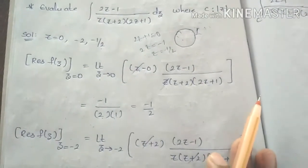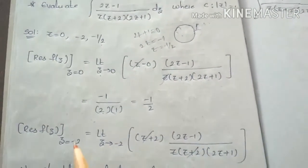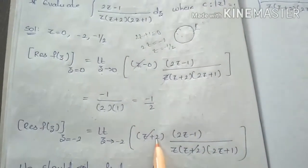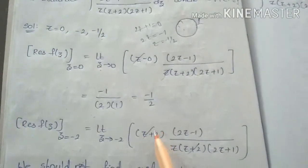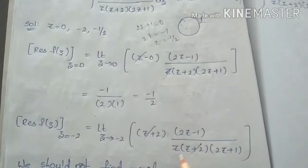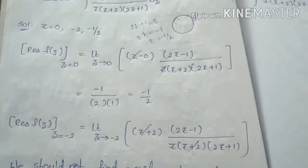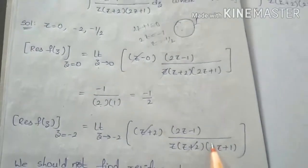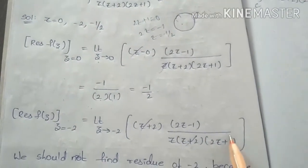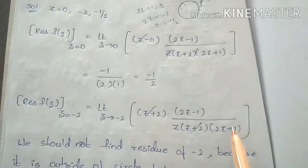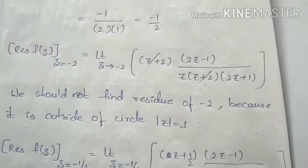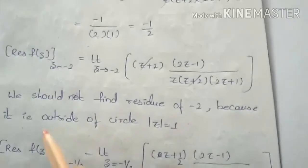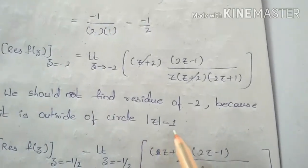Next, z equals minus 2. We take the limit as z tends to minus 2 of (z plus 2) times (2z minus 1) divided by [z into (z plus 2) into (2z plus 1)]. However, we should not find the residue at z equals minus 2 because it is outside the circle |z| equals 1.